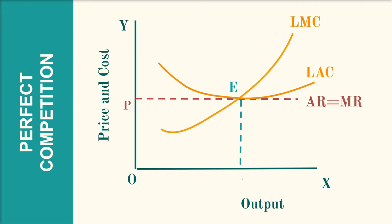The minimum point of the LAC curve is at point E, and therefore OQ is the most efficient output which society enjoys. The most efficient output is always where average cost is at its minimum, and this is the ideal or optimum output which firms produce in the long run.